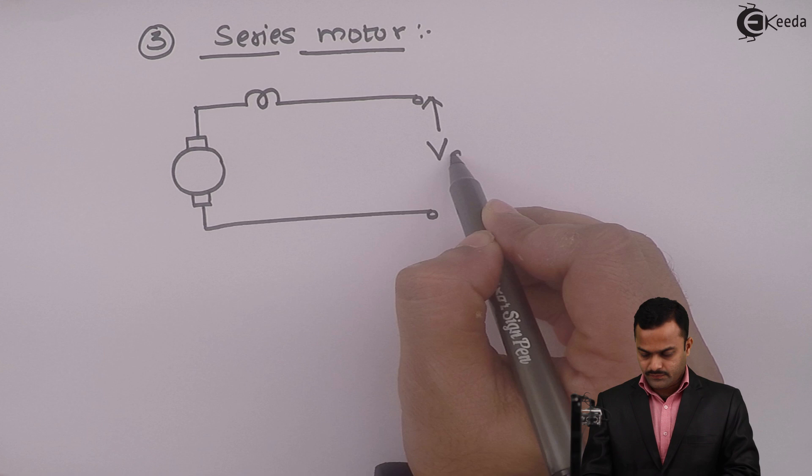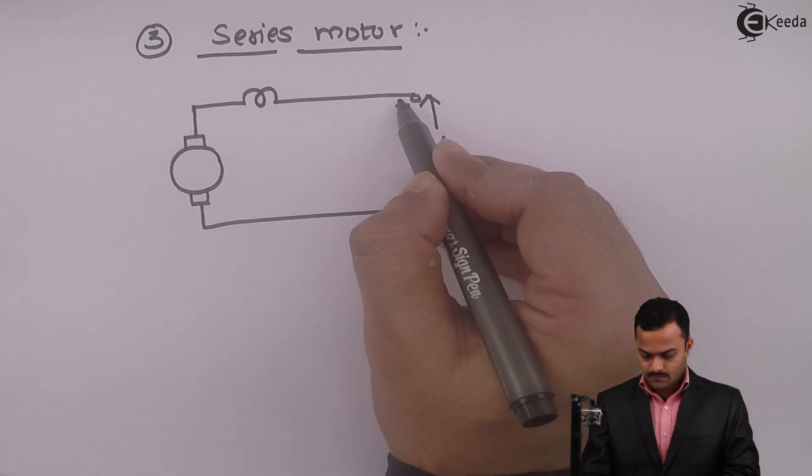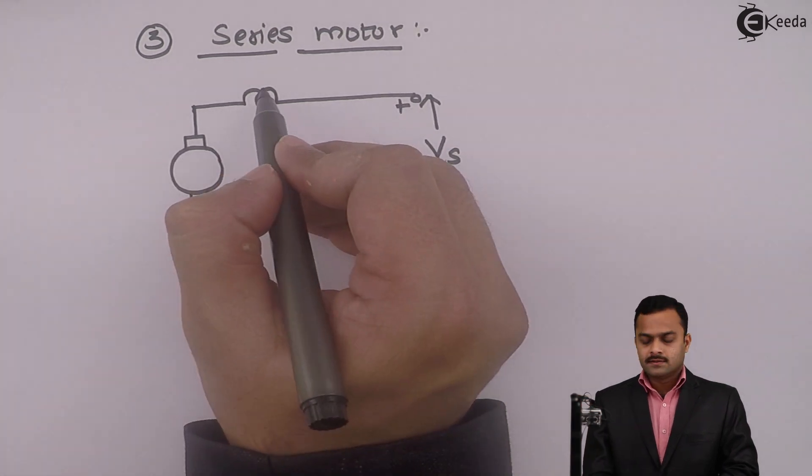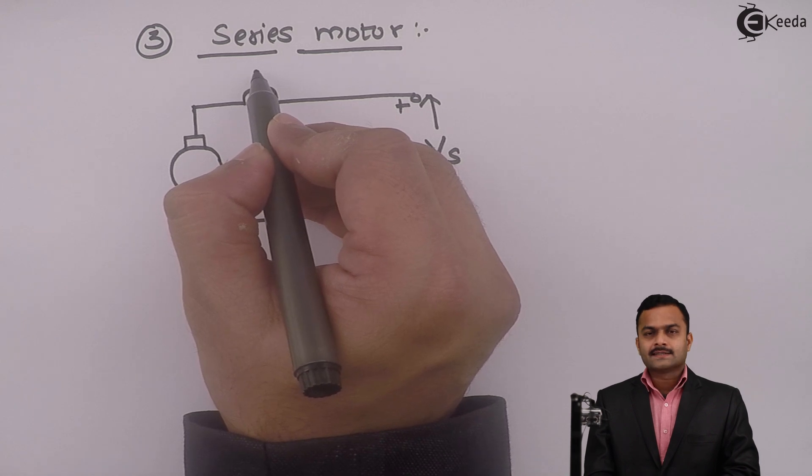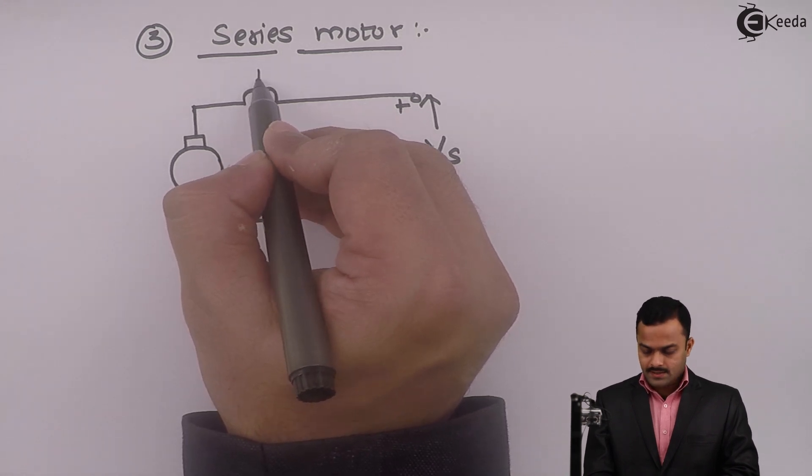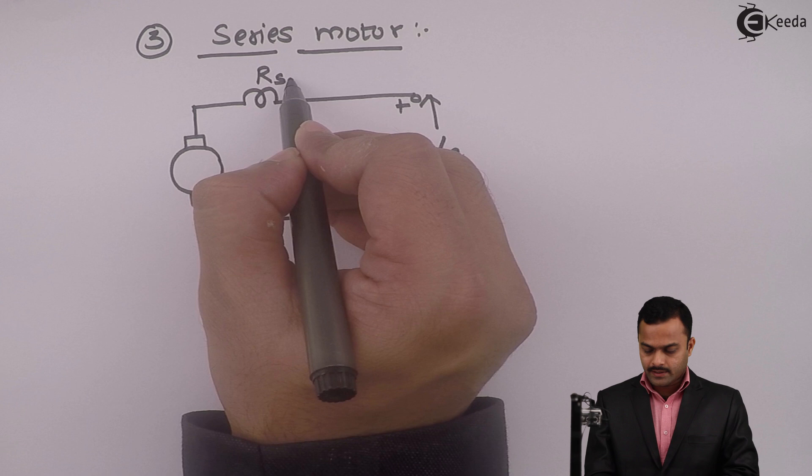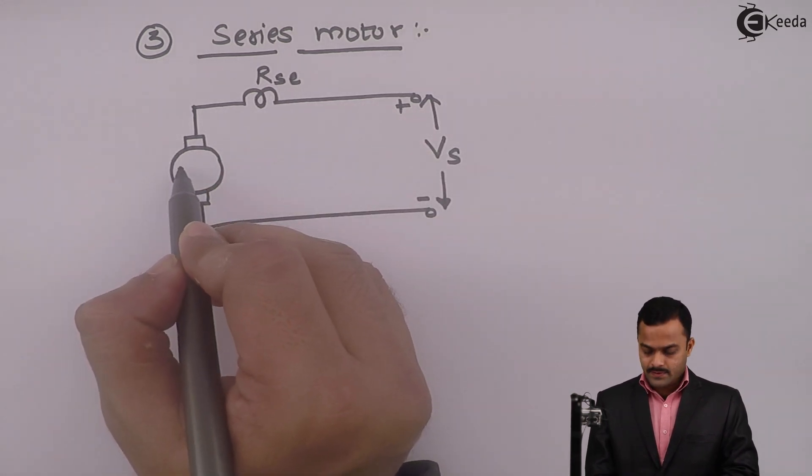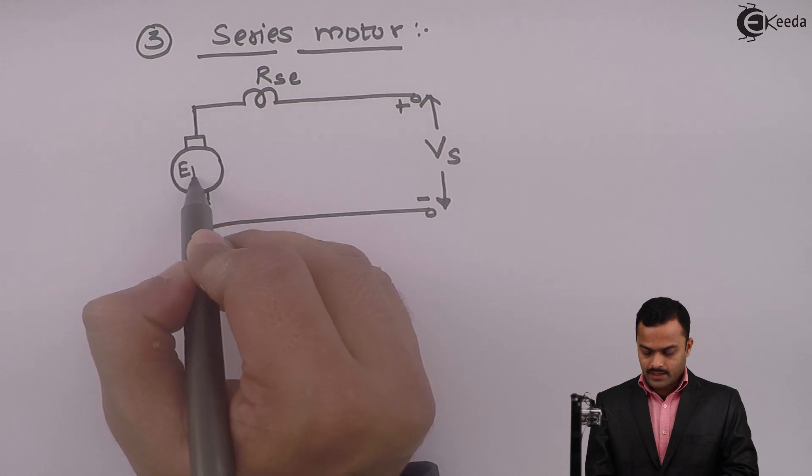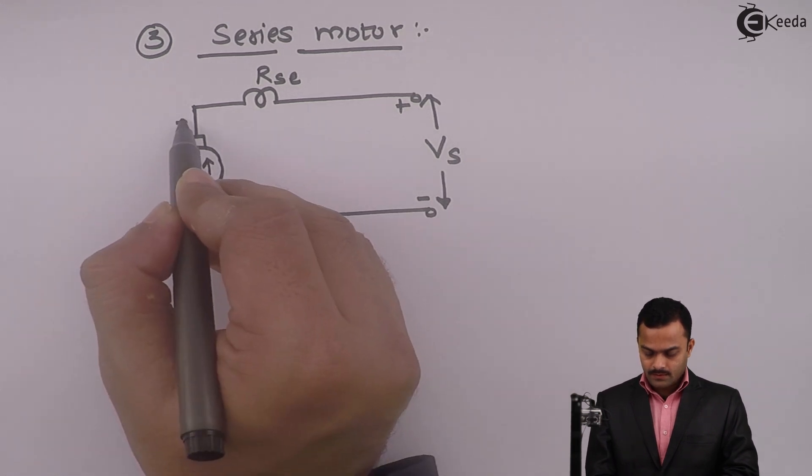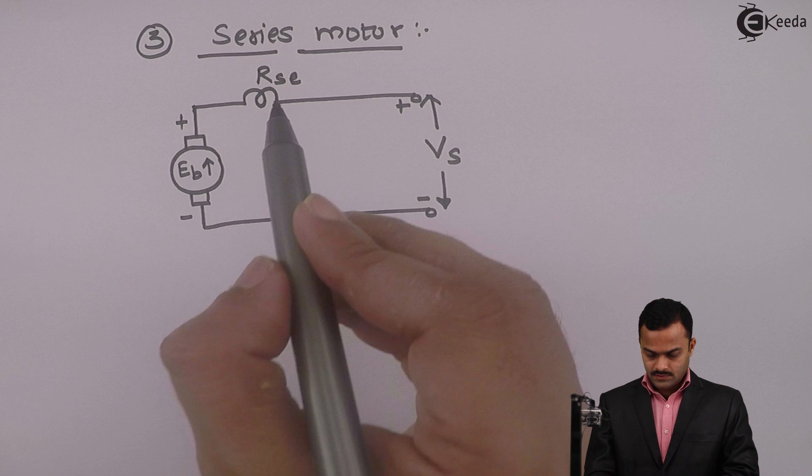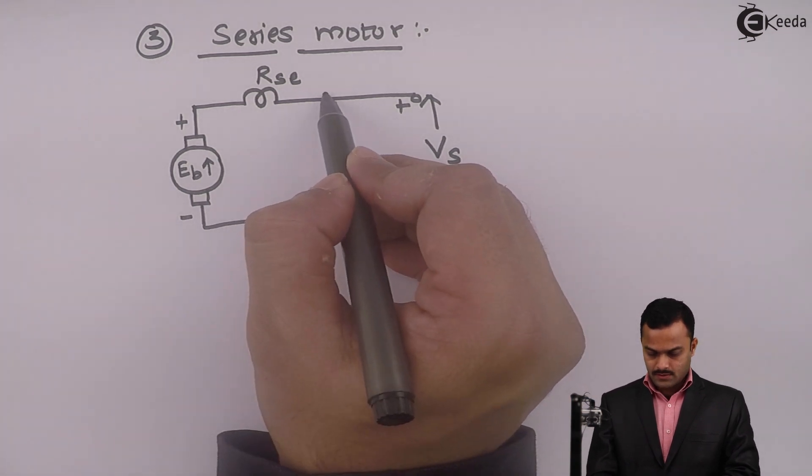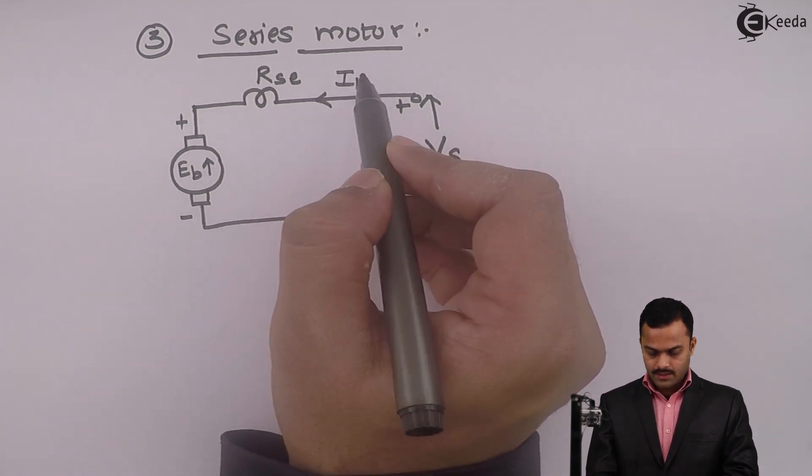In this motor, field winding is connected in series with armature. This is supply voltage Vs. This is resistance of field winding. Since it is connected in series I will represent it as Rse. This is armature giving a back EMF Eb. This will be the load current Il.